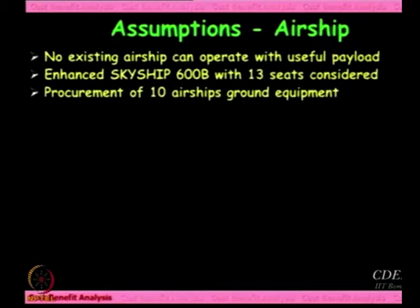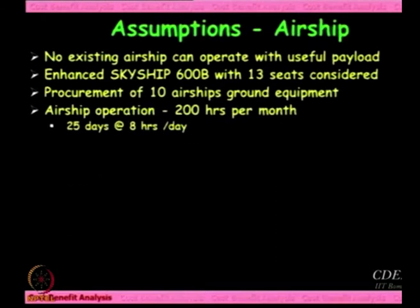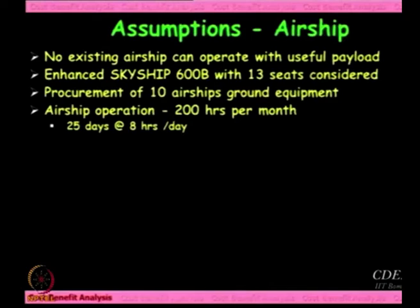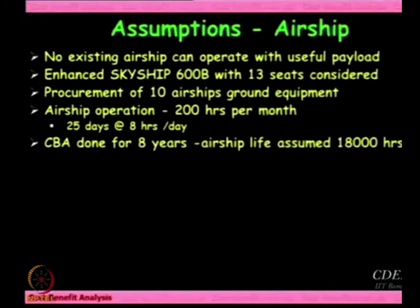If we are transporting 130 people per day and each airship can take 13 people, there are 10 airships required. Each airship will come with ground support equipment. 200 hours per month is what we fly the airship — 25 days — so we do not fly every day; we leave a few days for bad weather or maintenance. 8 hours a day is the total flying time. The cost-benefit analysis was done for 8 years, and we assume the airship life is 1800 hours, so after 8 years the airship is completely depreciated.